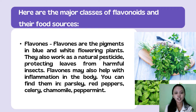Flavones are pigments in blue and white flowering plants. They also work as a natural pesticide, protecting leaves from harmful insects. Flavones may also help with inflammation in the body. You can find them in parsley, red peppers, celery, chamomile, and peppermint.